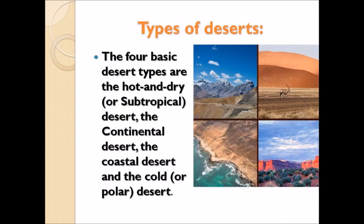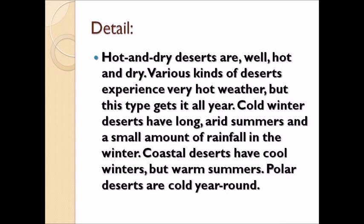Types of deserts: the four basic desert types are the hot and dry or subtropical desert, the continental desert, the coastal desert, and the cold or polar desert. Hot and dry deserts are hot and dry all year round. Cold winter deserts have long arid summers and a small amount of rainfall in winter. Coastal deserts have cool winters but warm summers. Polar deserts are cold.